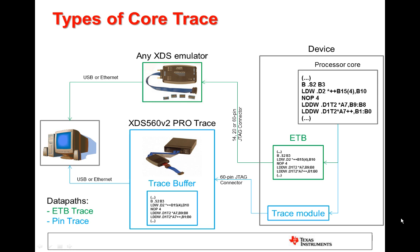Pin trace is a technology that features a trace buffer outside of the device. The trace buffer can be much larger in size and allows additional configurability, such as operation in both circular and one-shot mode. The one-shot mode allows retrieving the exact history of execution up to a given point of interest. However, the fact that the trace buffer is outside the device adds the requirement of having a high-speed communications interface to capture all the data, thus requiring additional hardware and limiting the choice of XDS emulator to just one, which is the XDS 560 V2 Pro Trace.